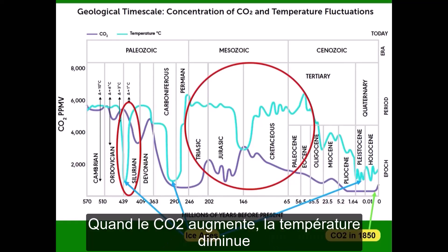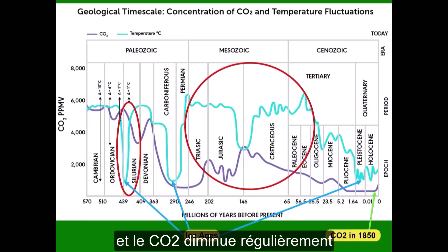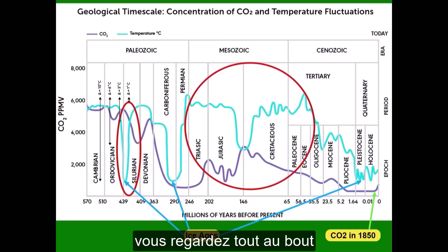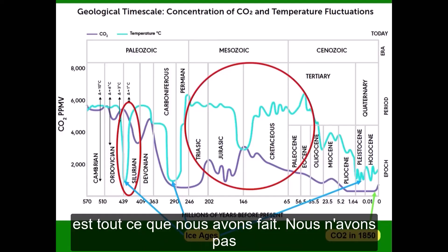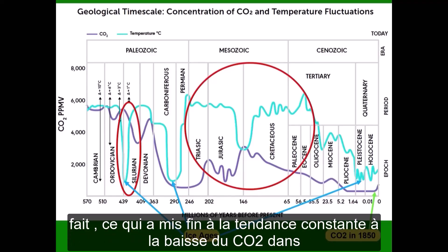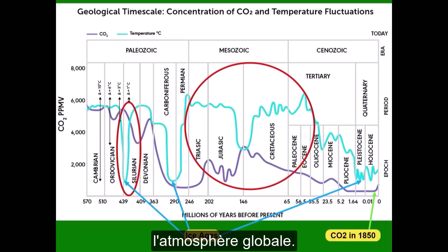When CO2 goes up, temperature comes down. When temperature goes up, CO2 comes down. And CO2 has been coming down steadily for 150 million years. There's a reason for that. And if you look at the very tail end on the right-hand side, that little uptick is all we have done — we have not done more than that. But we have at least done that, which has ended the constant downward trend in CO2 in the global atmosphere.